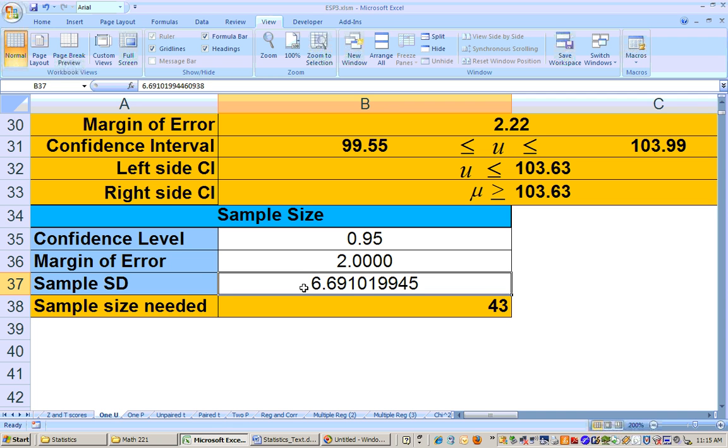Okay, and then put in your sample standard deviation, which is 6.69. And this tells you the total number of air flights that you would need to sample, 43.